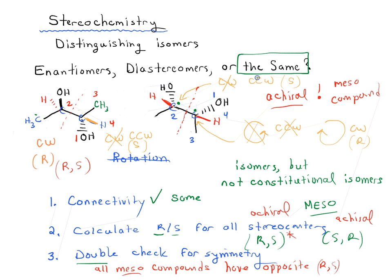Very common kind of question to run into. Sometimes call this the meso trap because it's so easy to miss that these two molecules, even though they might look like they're enantiomers, are actually the same. And they're the same because they're basically two ways of drawing the same achiral compound.